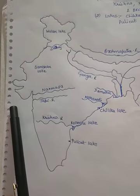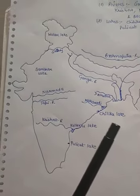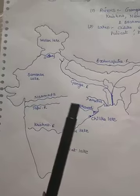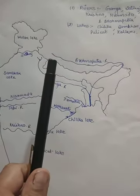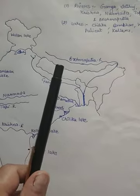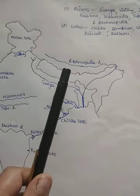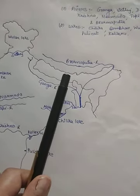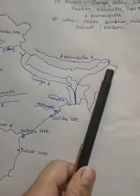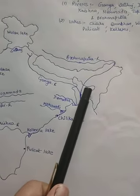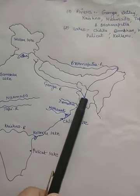Next we come to the Brahmaputra river. Basically, the Brahmaputra river rises in Tibet near Mansarovar lake, flows through Assam, and from Assam enters Bangladesh, where it meets the Ganga river.